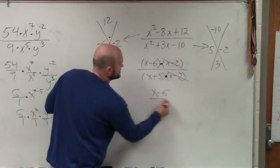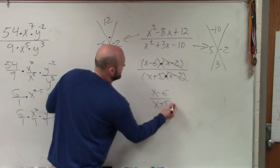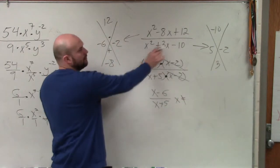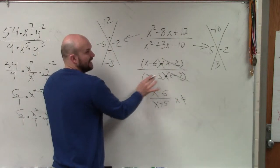So your final answer is x minus 6 over x plus 5, where x cannot equal what made our denominator 0? Negative 5 and 2.